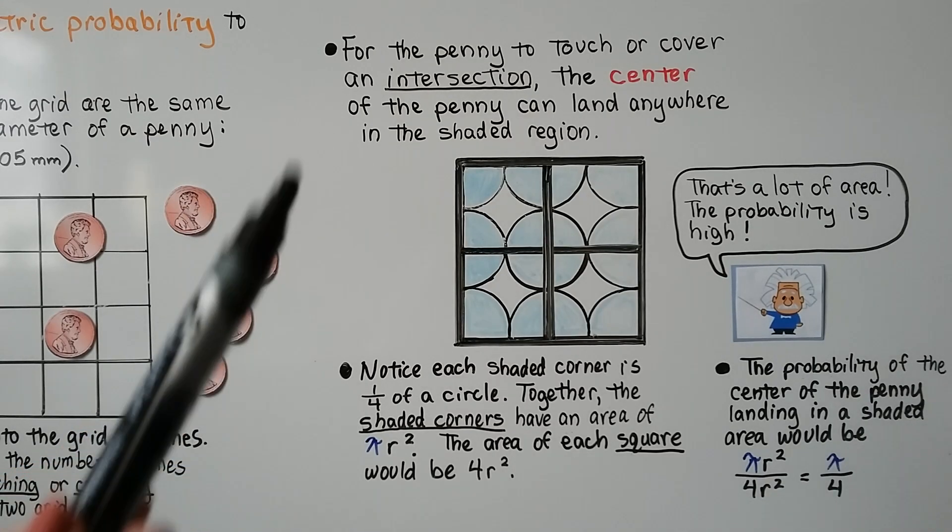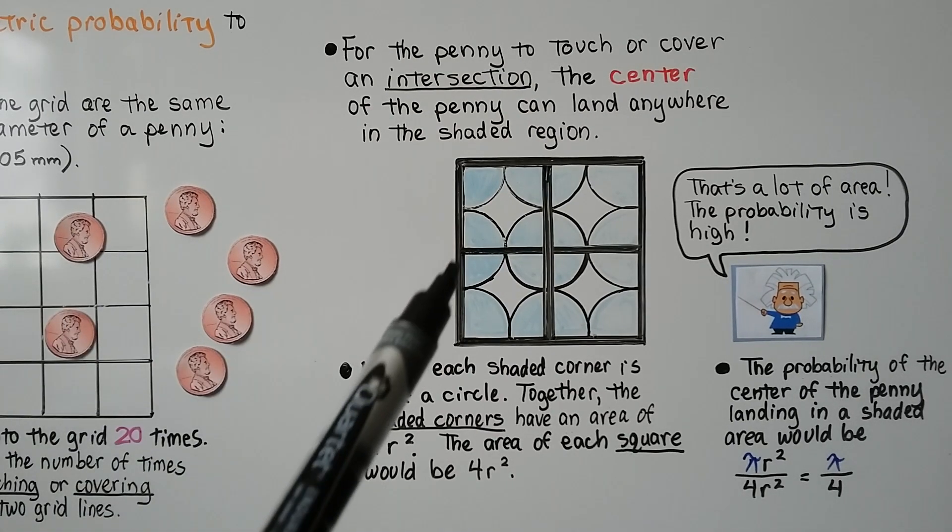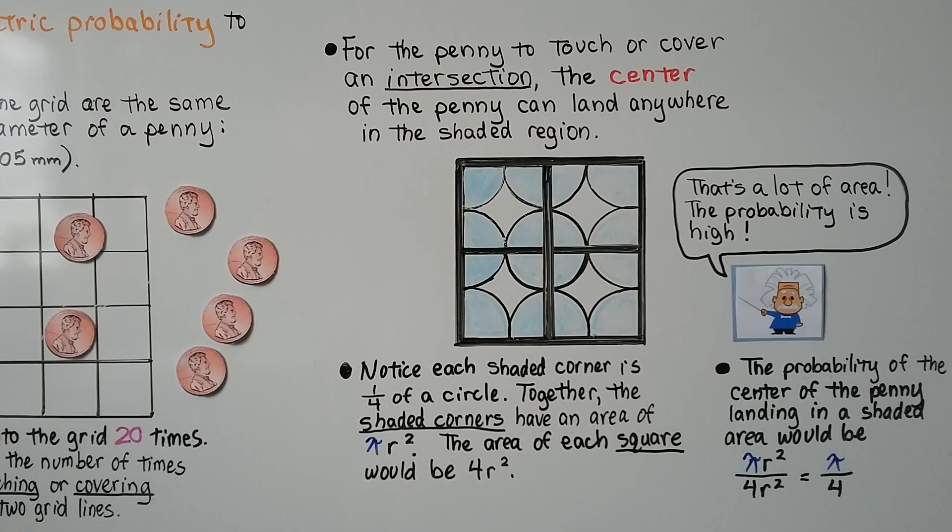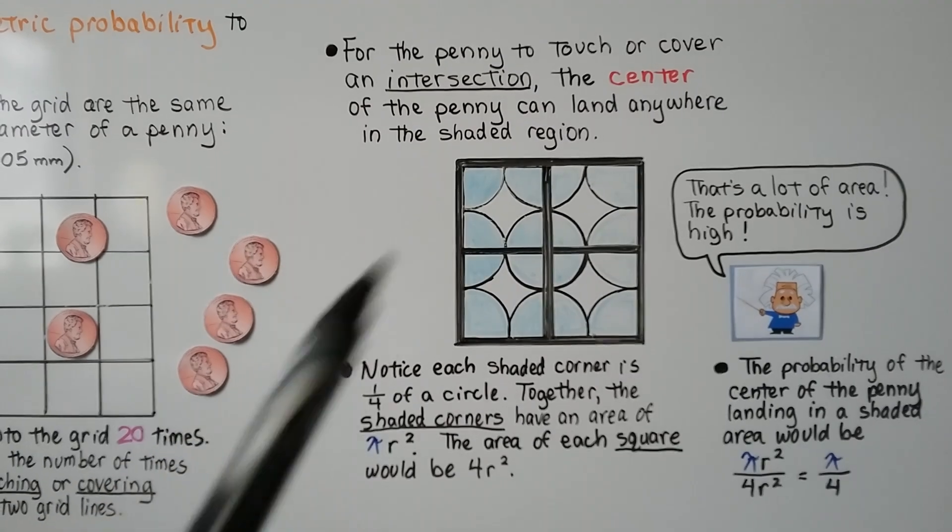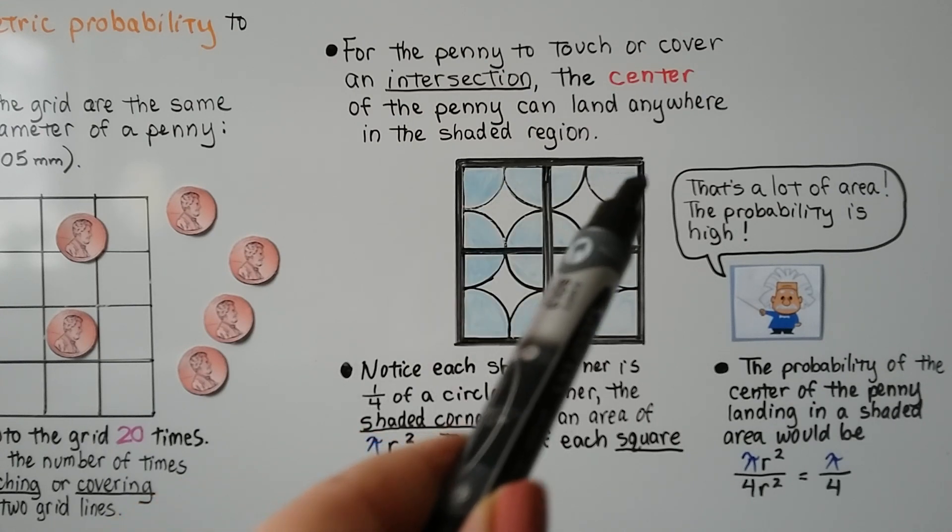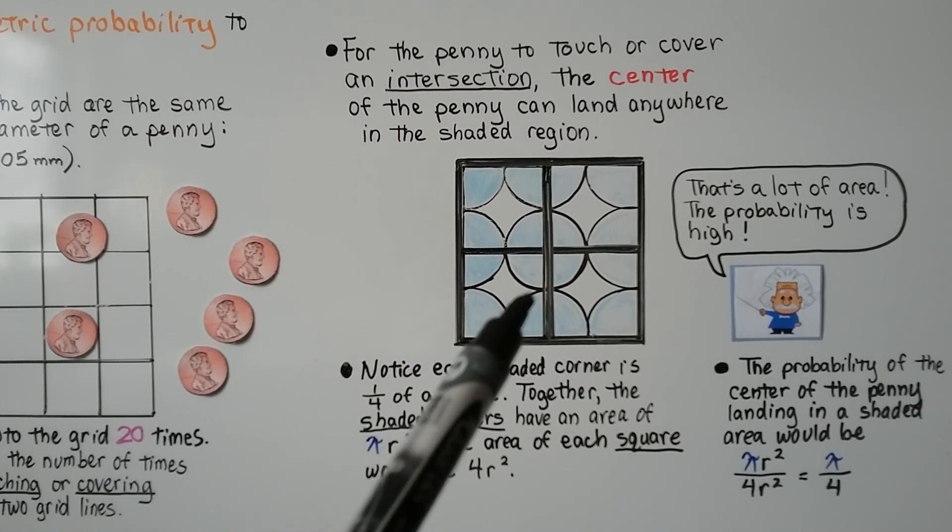For the penny to touch or cover an intersection, the center of the penny can land anywhere in these blue shaded regions. So one square right here, we have four of them. And if the center of the penny lands anywhere in these blue shaded regions, it'll count.